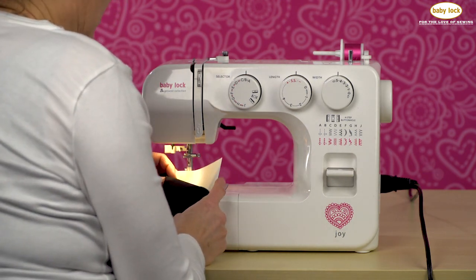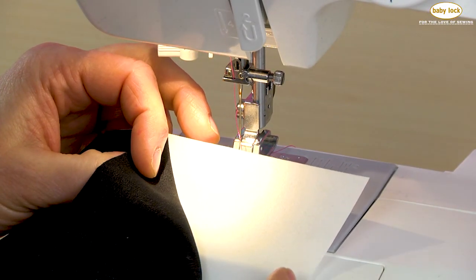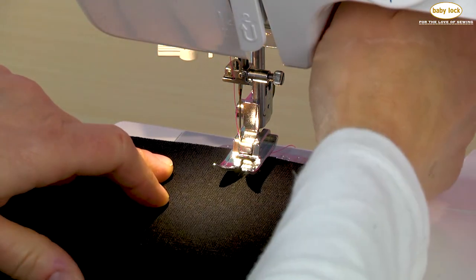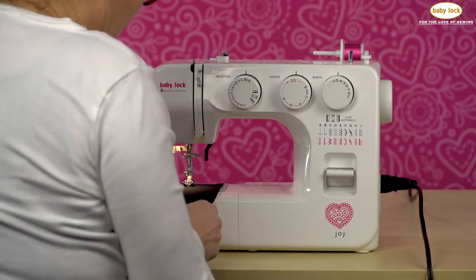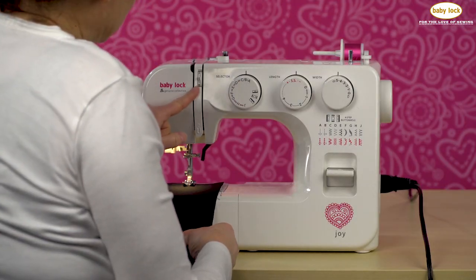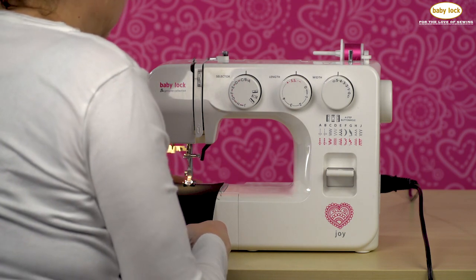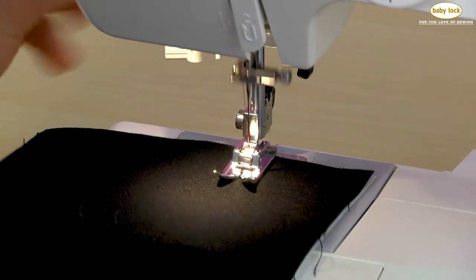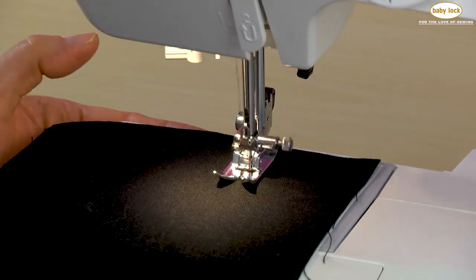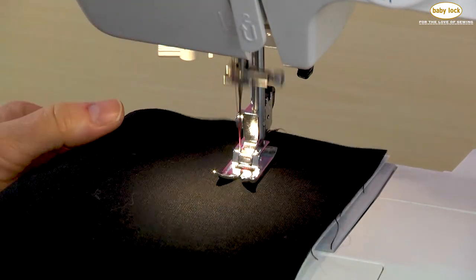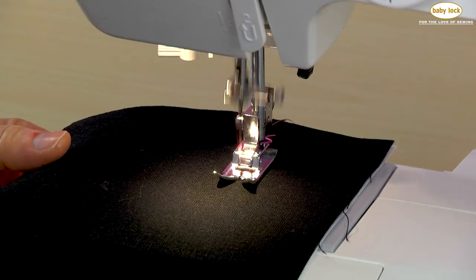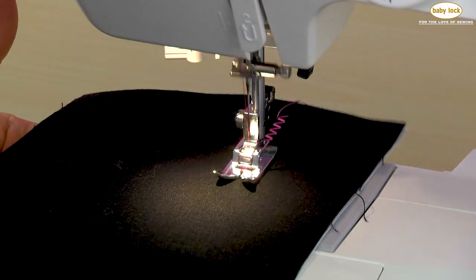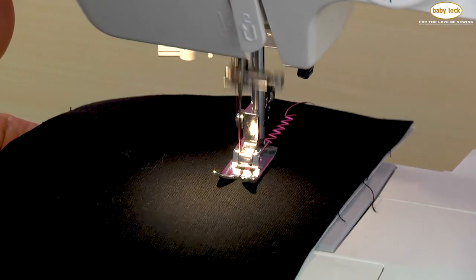Now, I do have a decorative thread in my needle, which is a rayon thread. I am using a stabilizer and then my base fabric. You may find when you are playing with decorative stitches that you might have to adjust the tension a little bit to accommodate for that decorative thread being in the needle, or you might possibly have to change your needle out. Currently, I'm using just a standard size 80-12 universal needle. Sometimes you might have to go to an embroidery needle if you start to see your needle thread fray.